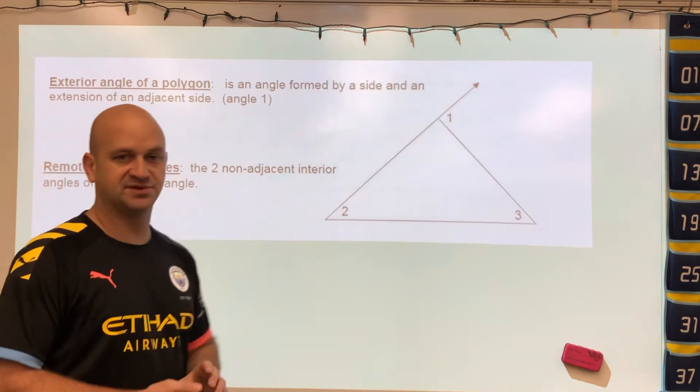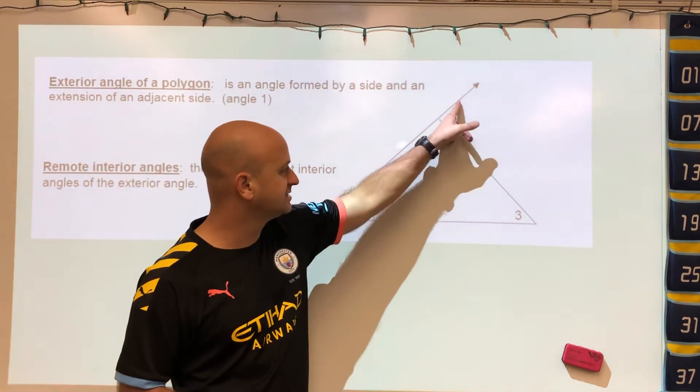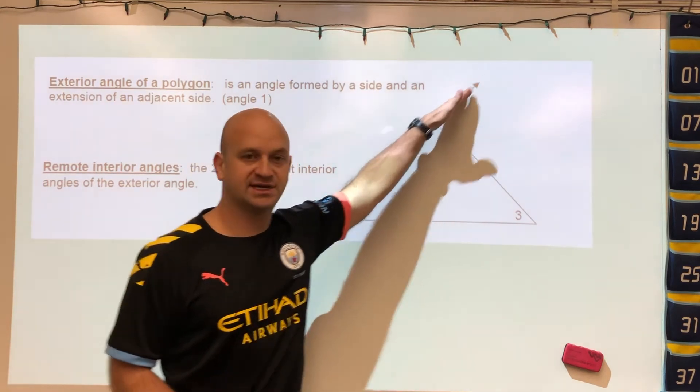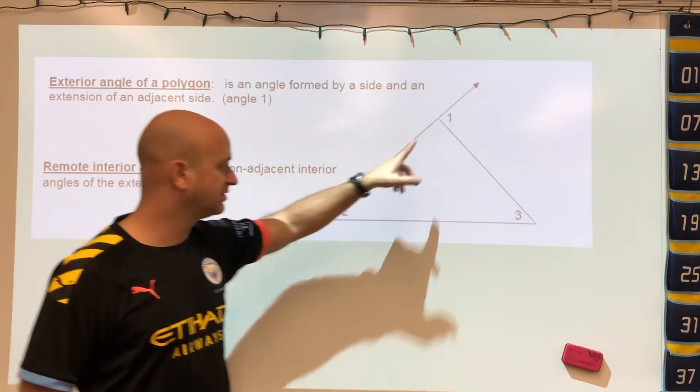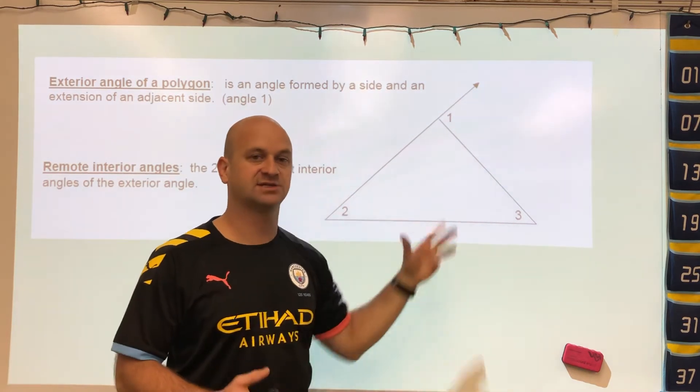Now the second type of angle in a triangle is called the exterior angle. This is an angle outside. This is the angle if you were to take one of the sides and extend it out past the triangle. That extended line to the side of the triangle would be the exterior angle.